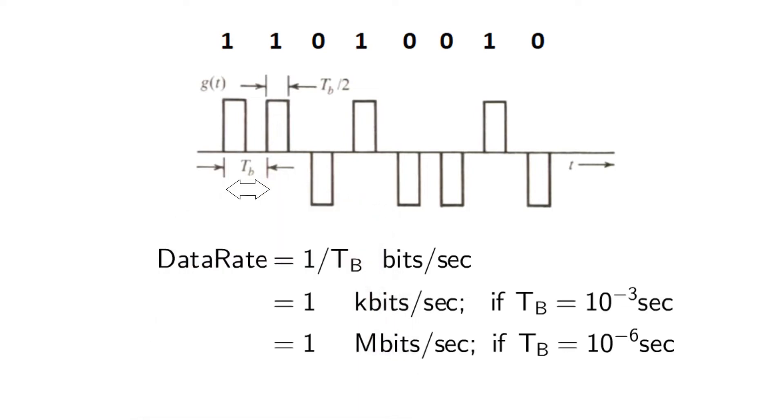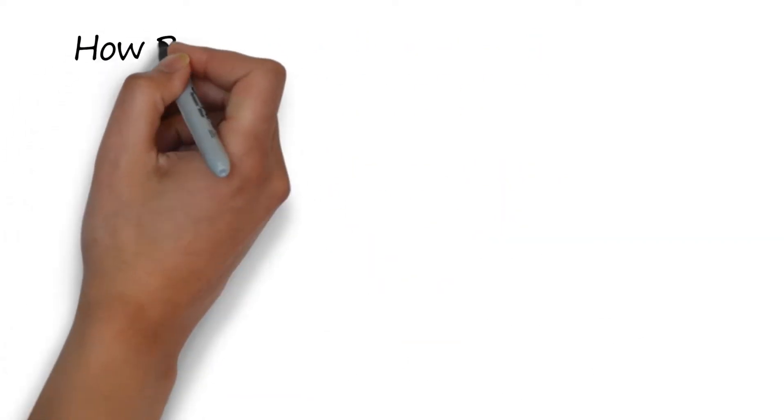However, decreasing this TB is only useful for receivers with good sensitivity level. Now how does this link with the bandwidth?